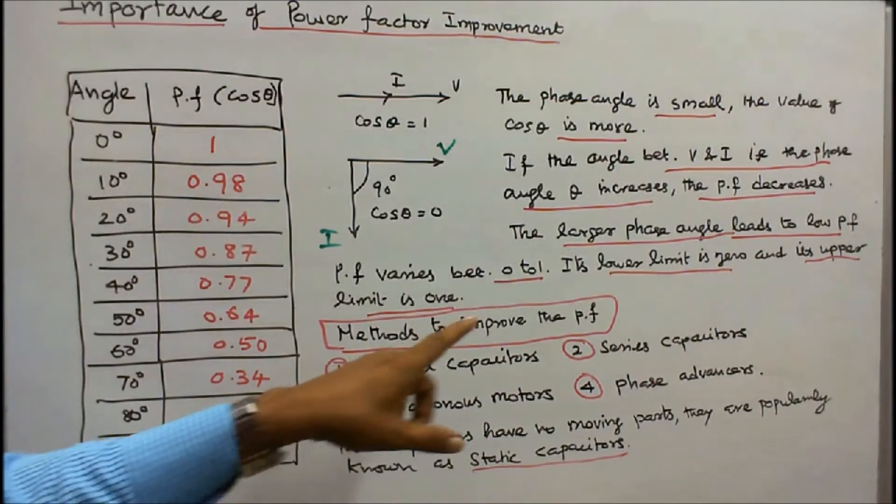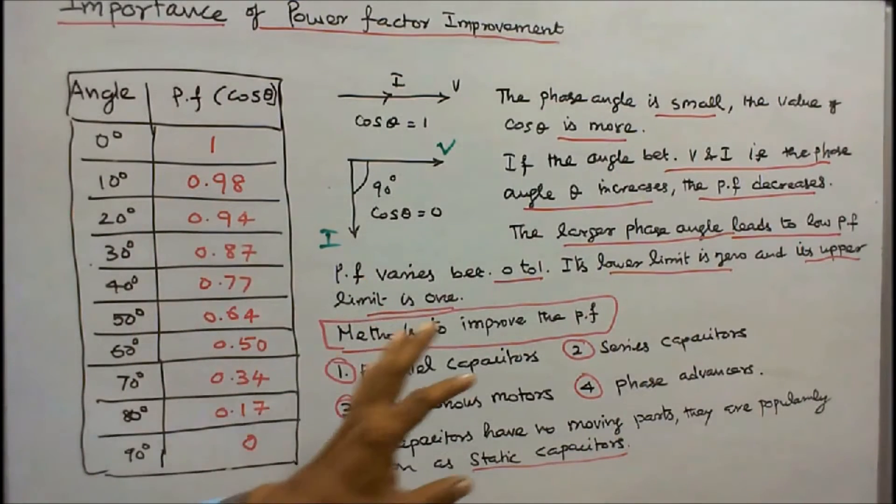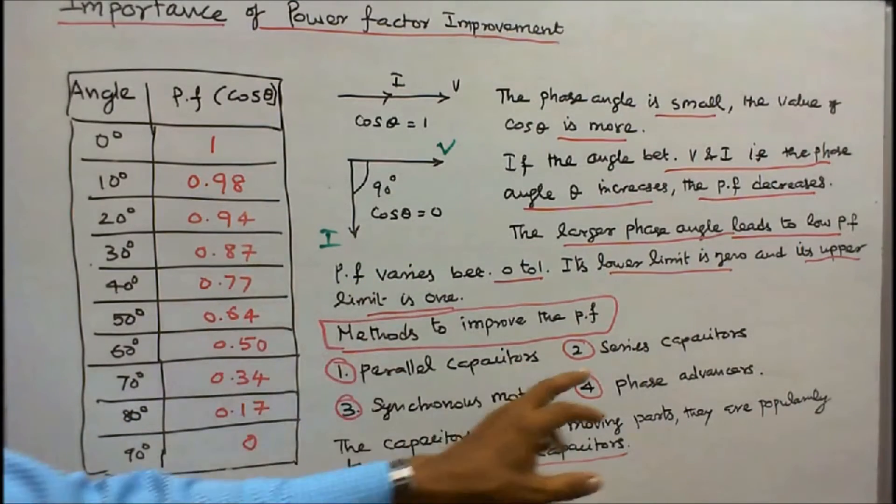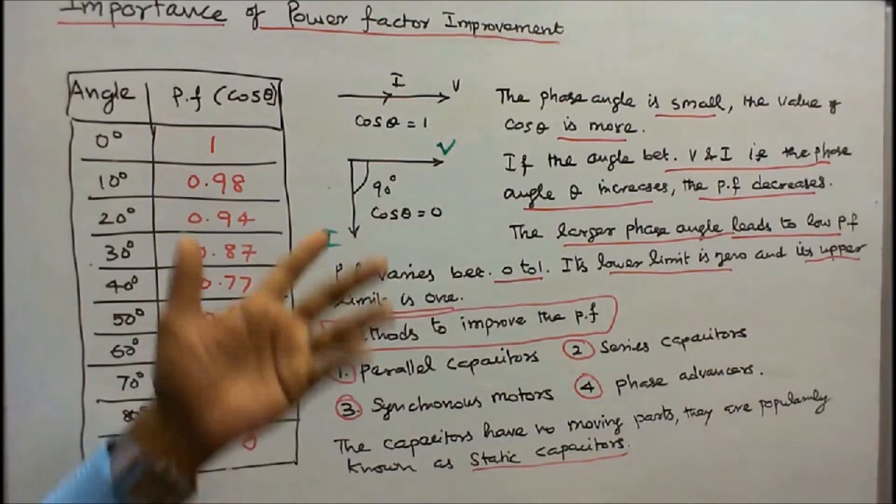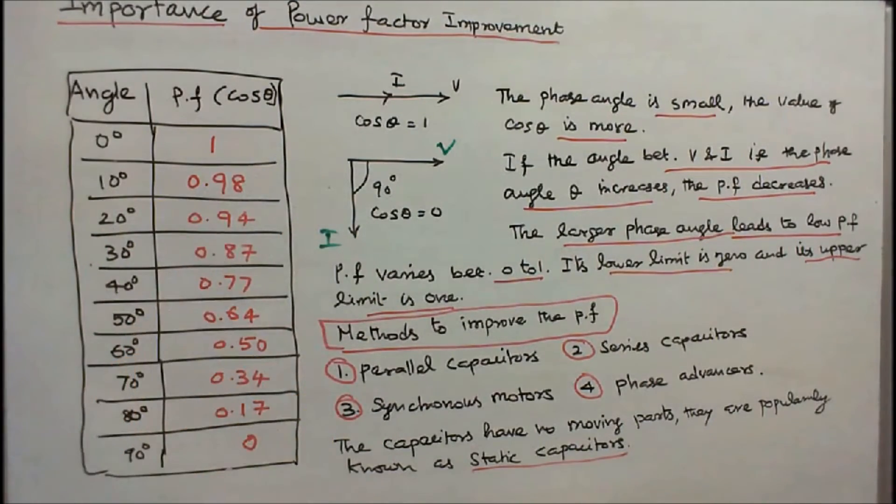Methods to improve the power factor: Number 1, parallel capacitors; Number 2, series capacitors; Number 3, synchronous motors; Number 4, phase advancers. The capacitors have no moving parts. They are popularly known as static capacitors.